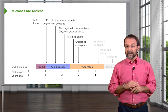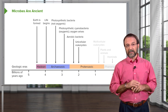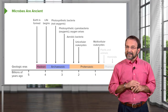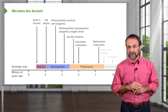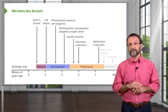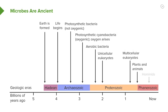Unicellular eukaryotes arose about two billion years ago. A little less than a billion years ago, the multicellular eukaryotes arose, like jellyfish, and then plants and animals about one and a half billion years ago. The hominids — which include humans, chimpanzees, and the apes — arose about 14 million years ago, and humans only 150,000 years ago.